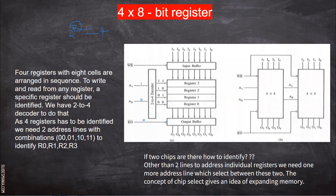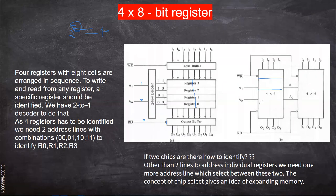So a four-register with eight cells are arranged in sequence. The same thing is arranged here as two four-register chips. This is one register, and here we have eight lines, so you can show eight bits of information. The same can be split like this — four by four and four by four. So we have four registers one, two, three, four here, and also one, two, three, four here. We call it a four-by-four arrangement.